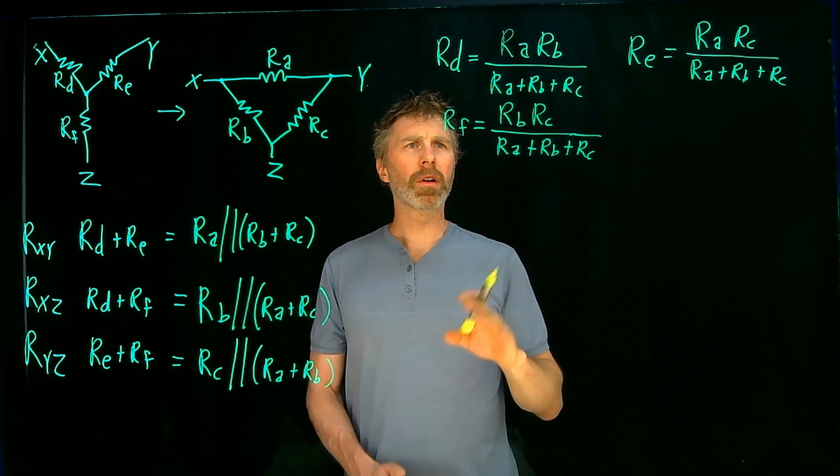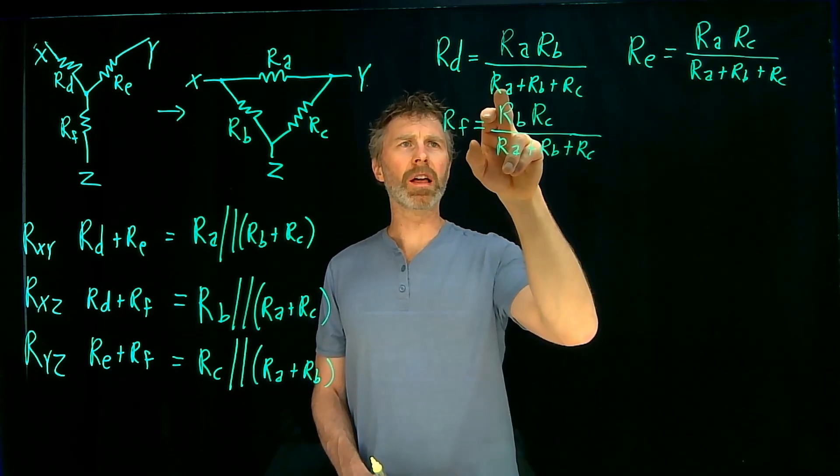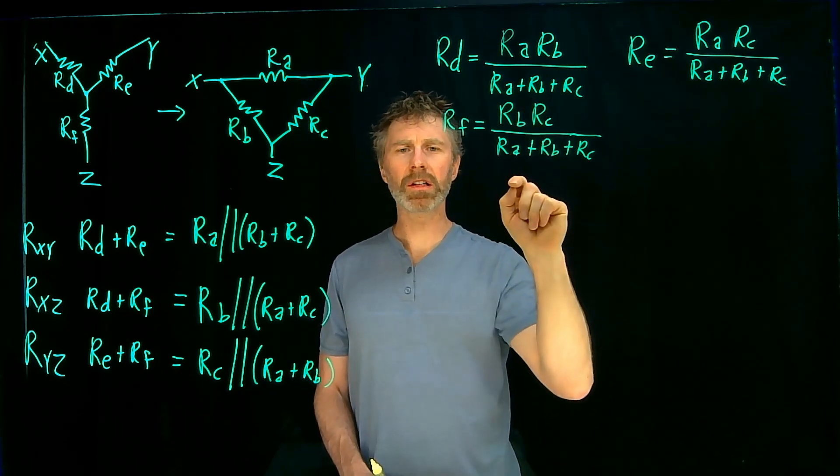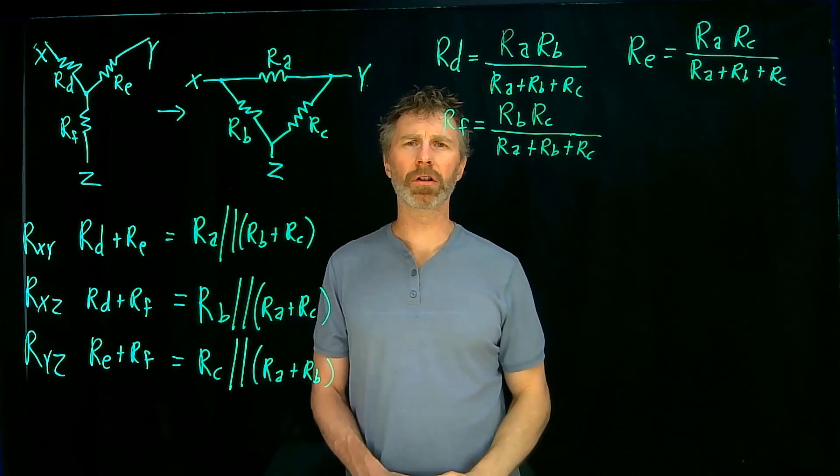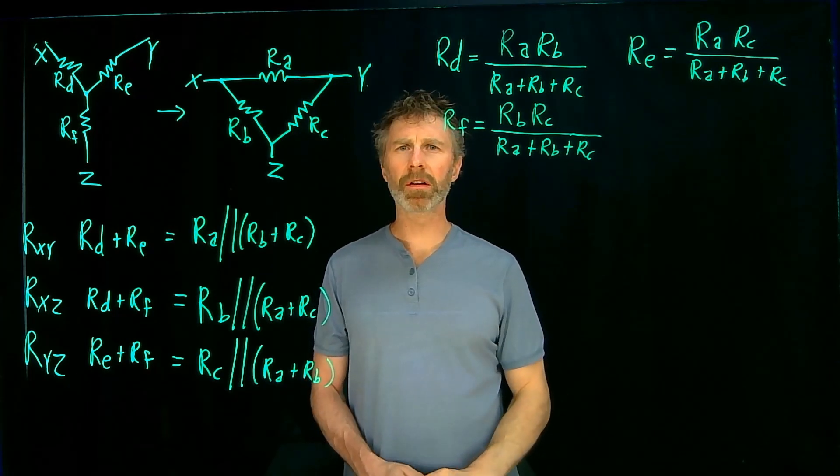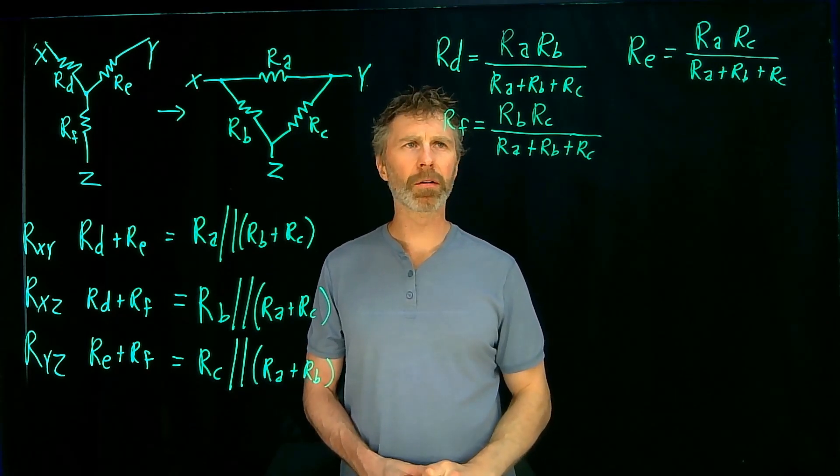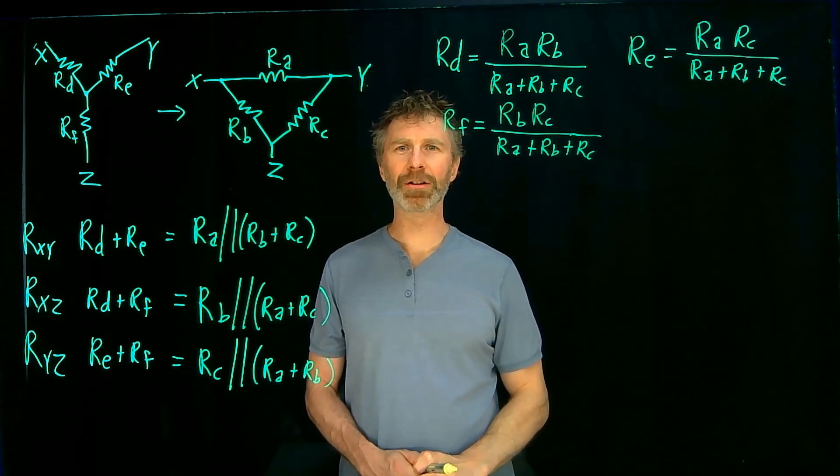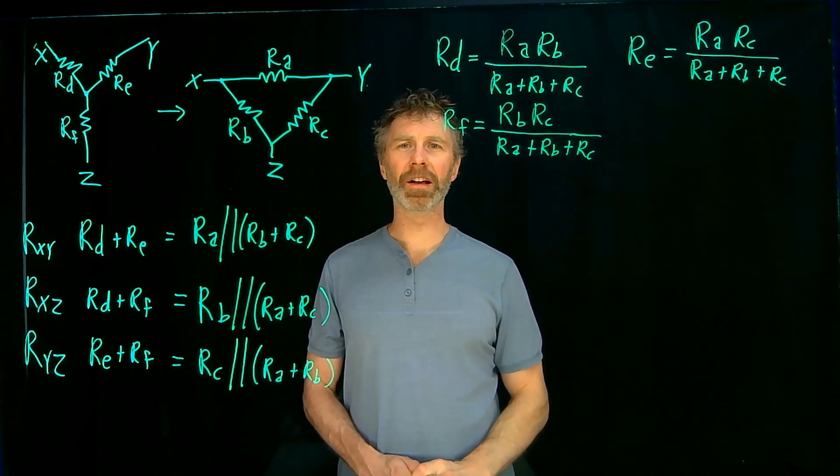Now what I want to do is figure out expressions for RA in terms of RD, E, and F, for RB in terms of RD, E, and F, and RC for in terms of RD, E, and F. And you'll have to bear with me. There's a fair amount of algebra that I'm going to go through. But in the end, hopefully it'll all be worth it when you get equations for your RA, RB, and RC.